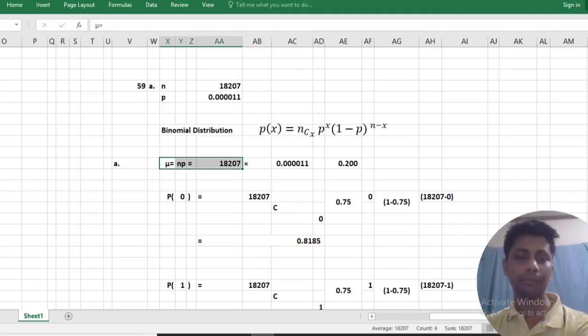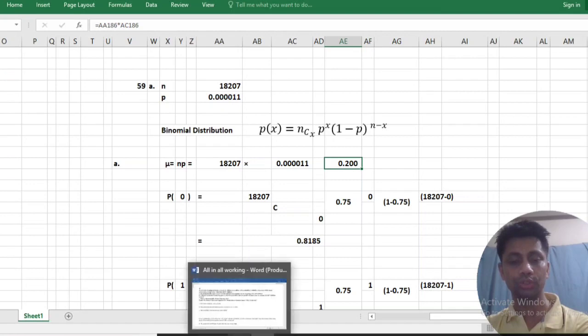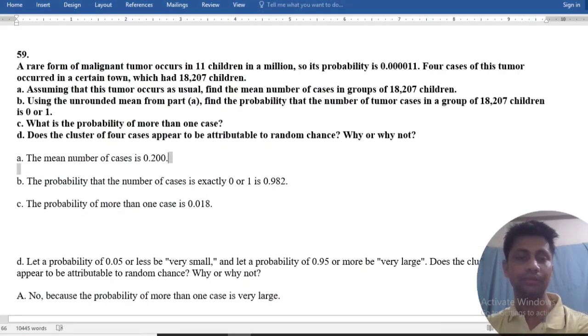Here mean equals N into P. So 0.0020. This is our desired mean.